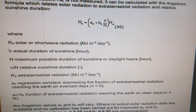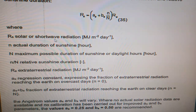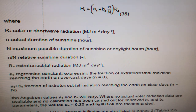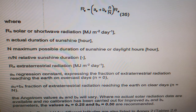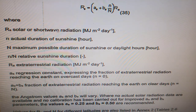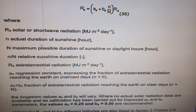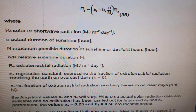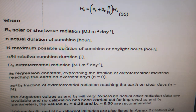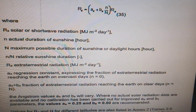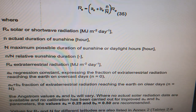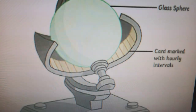Rs represents solar or short-wave radiation, and the unit is megajoules per meter square per day. Small n, as represented in the formula, is the actual duration of sunshine, calculated in hours. This is measured by the solar sunshine recorder that you have visited in the observatory — I am showing you this.